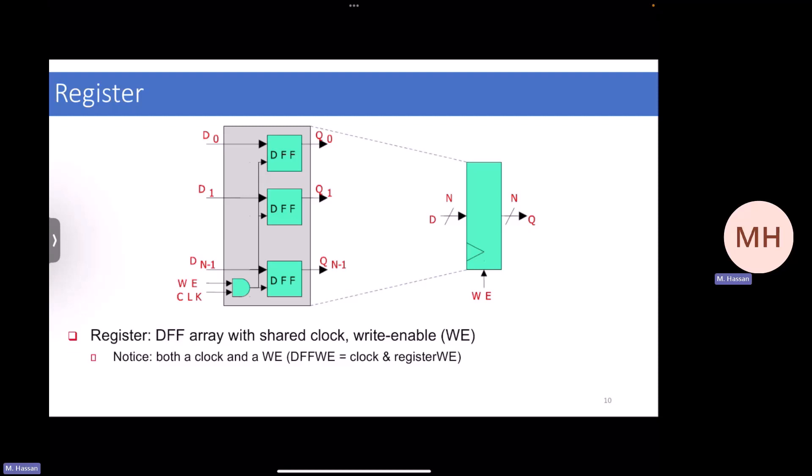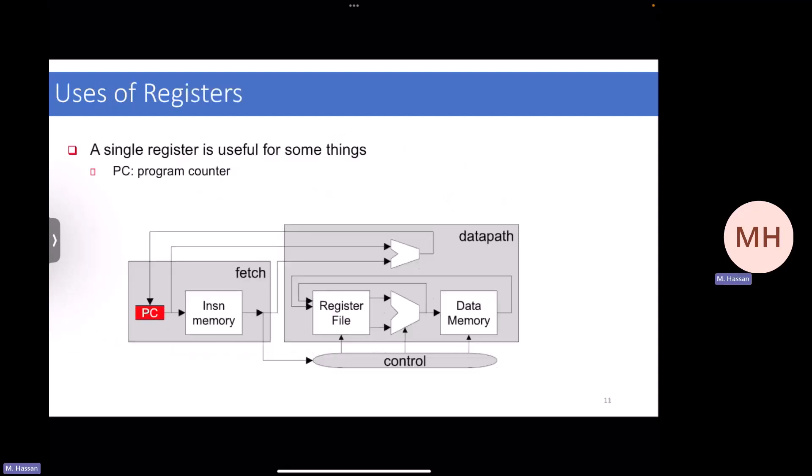Before going through them, we need to understand the datapath storage components. First, you need registers. A register is simply multiple flip-flops — a 32-bit register has 32 single-bit flip-flops storing data. You wrap them into one module with N-bit input, N-bit output, a write enable, and a clock. A register can be used as a single entity; for example, the program counter is a single register used to address the instruction memory.